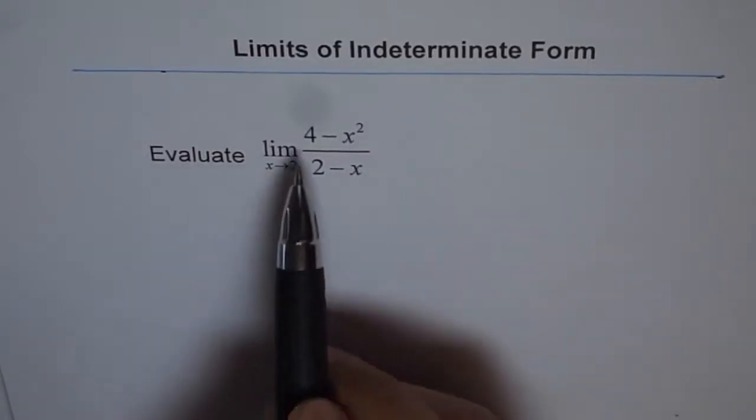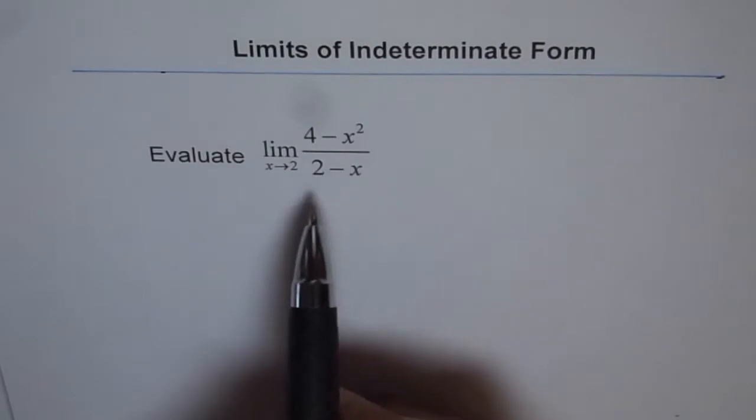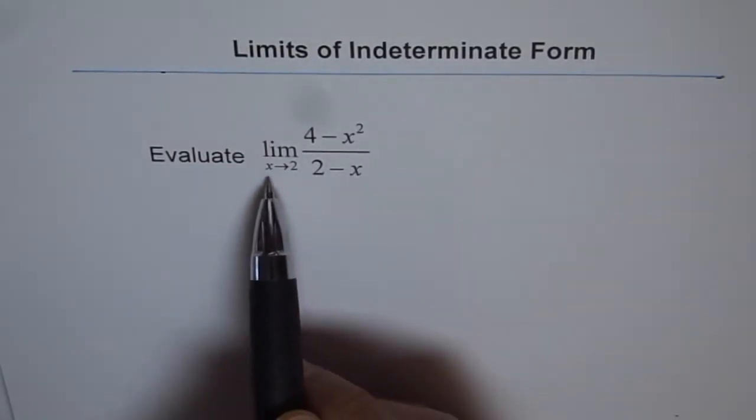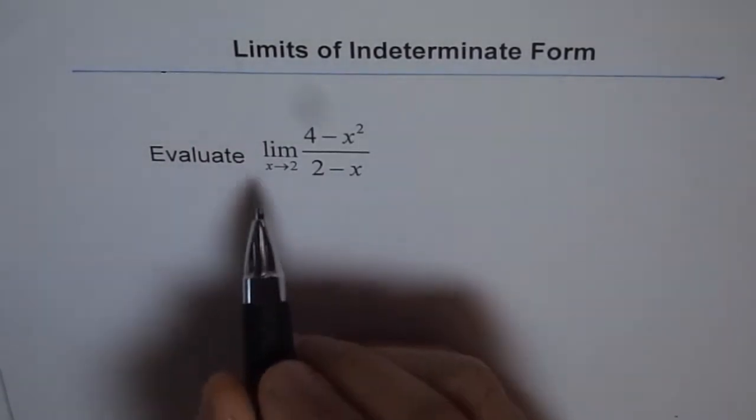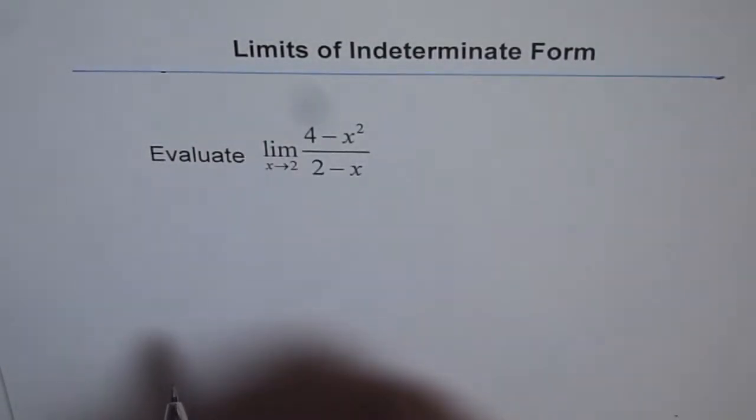Evaluate limit of the function 4 minus x squared divided by 2 minus x where x approaches 2. Now as a first step we will substitute the approaching value 2 in this function and see what we get.